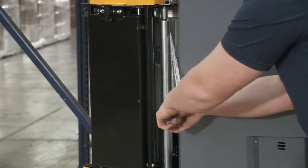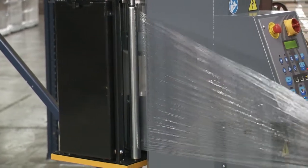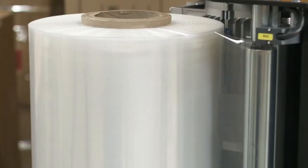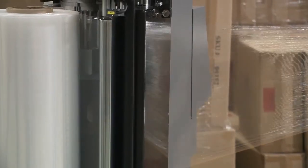The pre-stretch system on this machine is designed to stretch the film out inside the carriage and apply it to the load. If the carriage is not properly feeding out film, it will be difficult to pull out and will likely tear once the cycle is started.